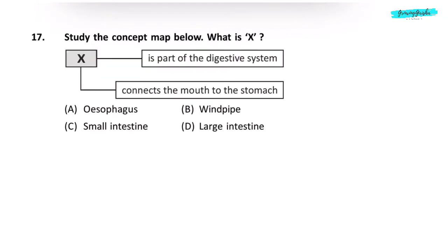Question 17. Study the concept map below. What is X? Is a part of the digestive system and connects the mouth to the stomach. Windpipe is not a part of digestive system. Oesophagus connects the mouth to the stomach. Correct answer is option A.